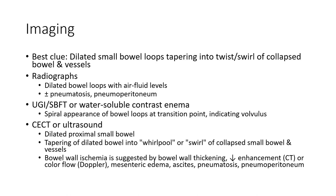Upper GI or small bowel follow-through shows the spiral appearance of the bowel loop, with a transition point indicating the volvulus. Contrast-enhanced CT shows dilated proximal small bowel tapering into a whirl of collapsed small bowel and vessels. Bowel wall ischemia is suggested by bowel thickening, decreased enhancement, decreased color flow on Doppler, pericolonic edema, ascites, pneumatosis, or pneumoperitoneum.